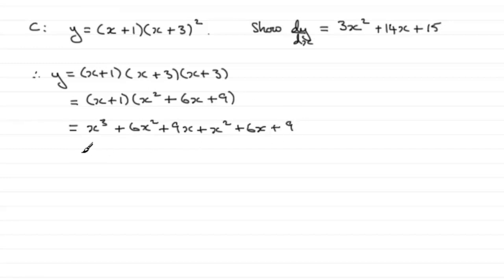And then we just need to group this together, starting with x cubed. And then we've got 6x squared and x squared, so that's clearly 7x squared. We've got 9x and 6x, so that's 15x. And then the constant 9. So we've got each of the terms in a form that we can differentiate.